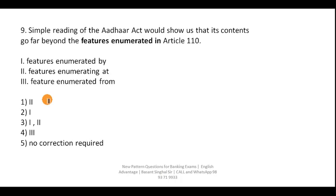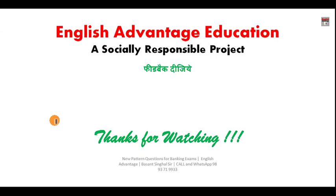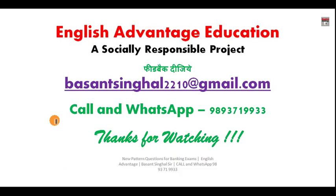Question 9: 'A simple reading of the Aadhaar Act would show us that its contents go far beyond the features enumerated in Article 110.' The features are enumerated — they are numbered and listed. This word is quite right here, and the phrase is already correct. This doesn't require any correction. That is how you have to solve these questions in IBPS bank exam or any other banking exam — you just need a fair idea of the sentence, and this approach will fetch you very good marks.